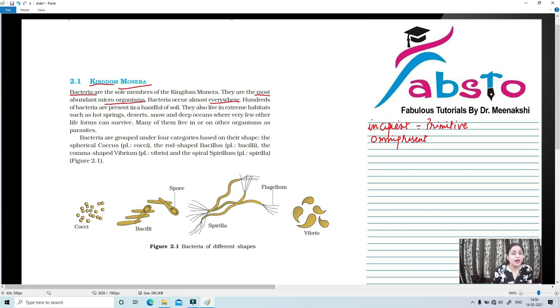Hundreds of bacteria are present in a handful of soil. They also live in extreme habitats such as hot springs, deserts, snow, deep oceans, where very few other life forms can survive. Now, we are going to study how they can do this. Their cell wall has some differences than the normal plants. That is why they can thrive in such harsh climates. Many of them live in or on other organisms as parasites. Parasites are those organisms which derive their nourishment from the host organism and in turn, they harm the host also.